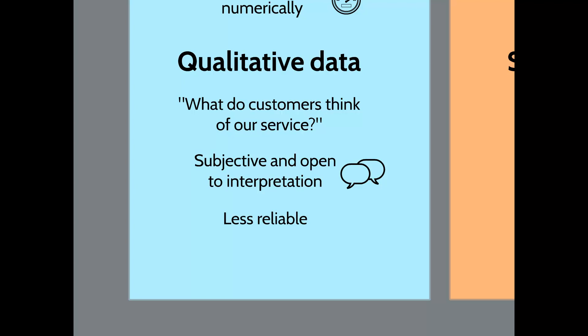The advantage of qualitative data over quantitative data is that it provides a more in-depth insight. If you score customer service out of 10 and get a 7 average, that's well and good but it doesn't necessarily tell you how to improve. But if you ask questions about what they think and how you could improve, you might get people saying you could be friendlier or quicker — and that's something you can actually use to improve customer service rather than just giving it a score.